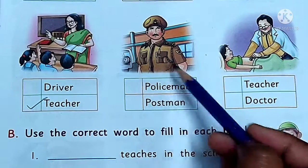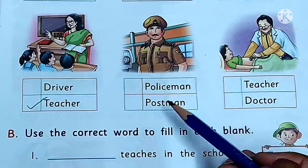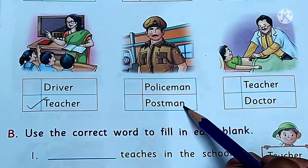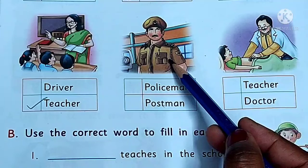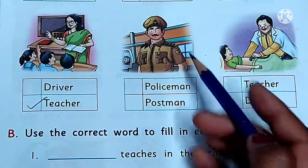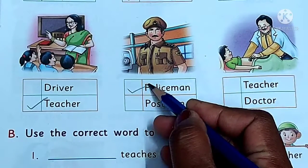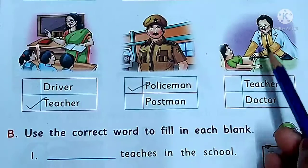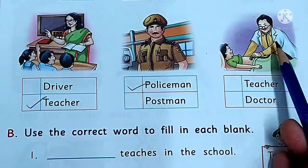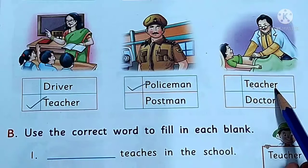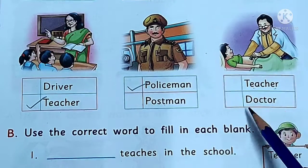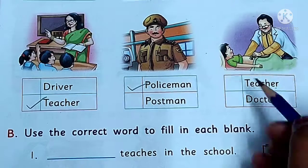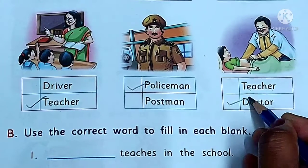Then next, see the picture. Who is he? Policeman or postman? Who is he? He is a policeman. Next, see this man. Who is he? Teacher — doctor. Who is he? Doctor.